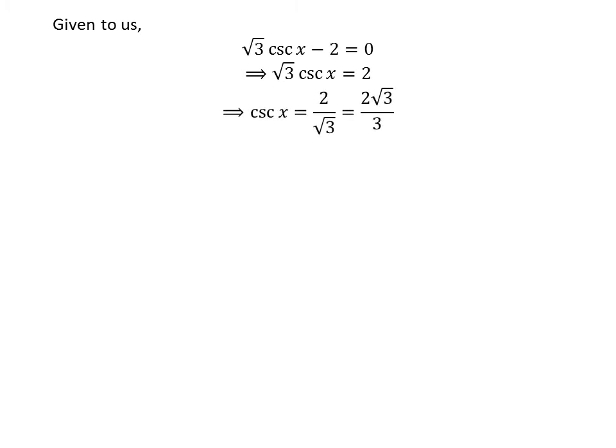Let us divide both sides by square root of 3, so we get cosecant of x is equal to 2 upon square root of 3. Multiplying the numerator and the denominator by square root of 3, we get cosecant of x is equal to 2 times square root of 3 upon 3.